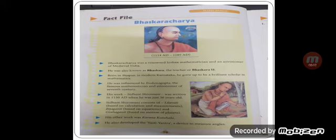Born in Bijapur in modern Karnataka, he grew up to be a brilliant scholar in mathematics. He was influenced by Brahmagupta, the famous mathematician and astronomer of the 7th century. His work Siddhant Shiromani was written in 1150 AD when he was just 36 years old. It consists of Leelavati, based on calculation and measurements; Bijganit, based on equations; and Grahganit, based on the motions of planets. His other work was Kann Kathula. He also developed the yasti yantra, a device to measure angles, like a protractor.